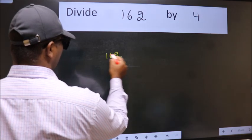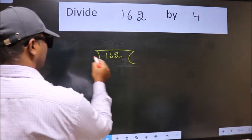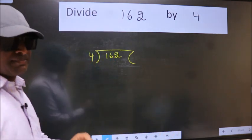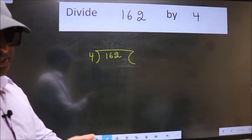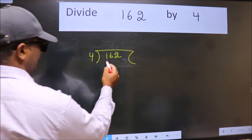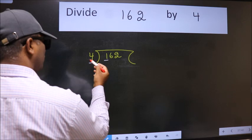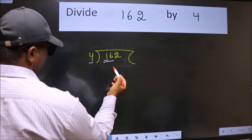162 here, 4 here. This is your step 1. Next. Here we have 1 and here 4. 1 is smaller than 4. So take 2 numbers, 16.